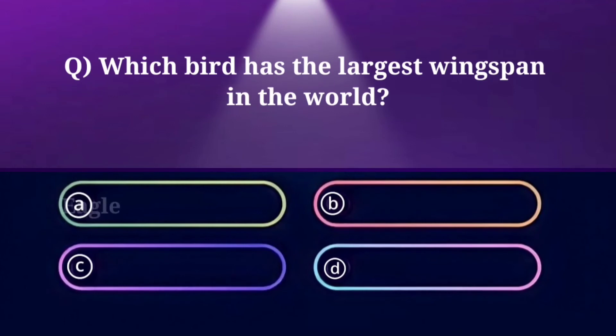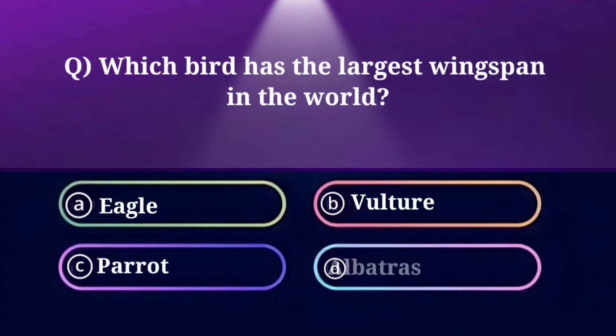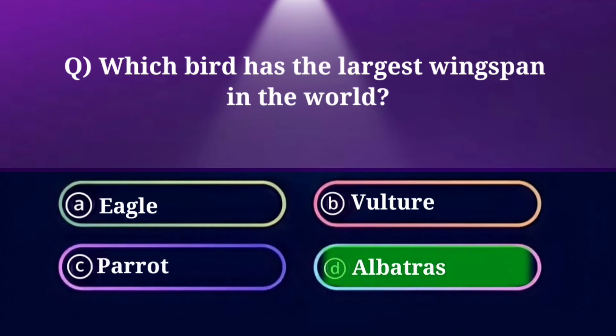Which bird has the largest wingspan in the world? Option A: Eagle, B: Vulture, C: Parrot, D: Albatross. And the answer is Albatross.